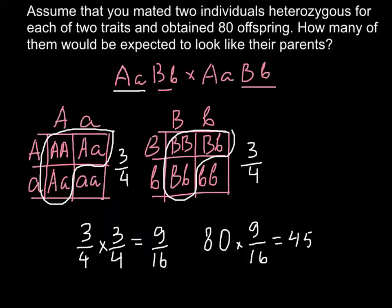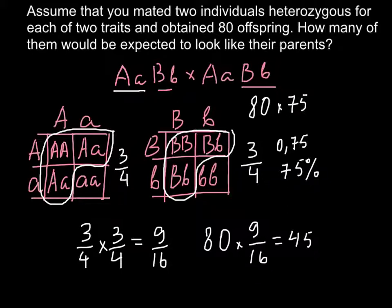And also three quarters, we can say that this is 0.75 or 75 percent. So if you prefer to use percentages, it would look like this: you have to multiply 80 by 75 percent for the first set of alleles A, and also we have to multiply by 75 percent for the second set of alleles, and the result would be the same, 45.